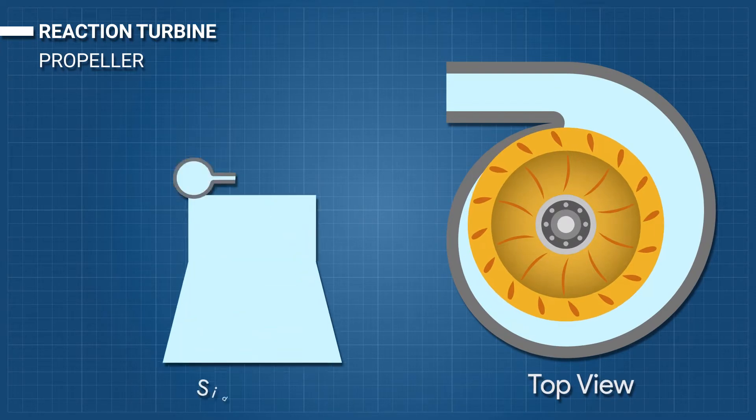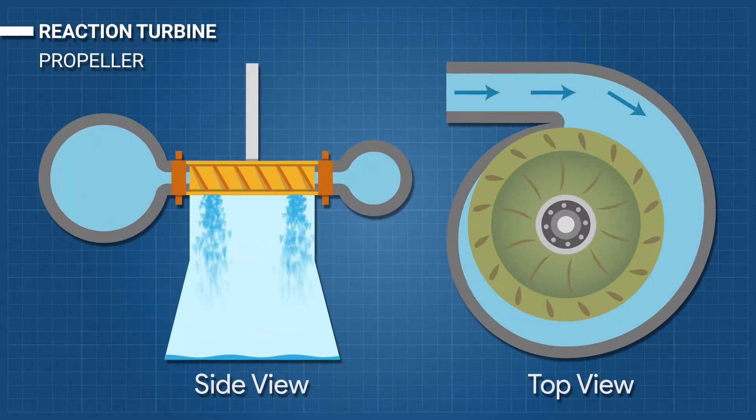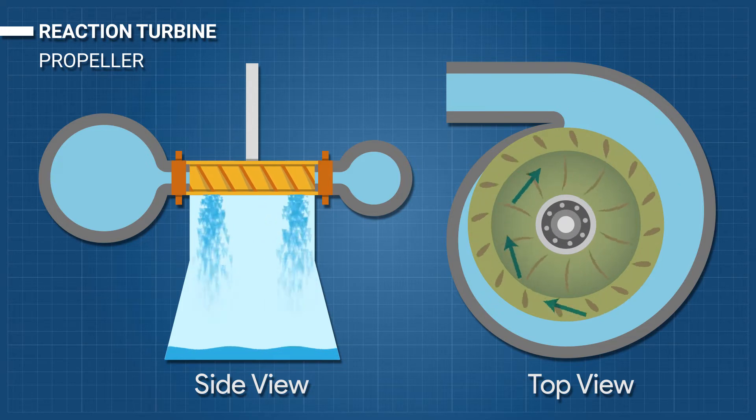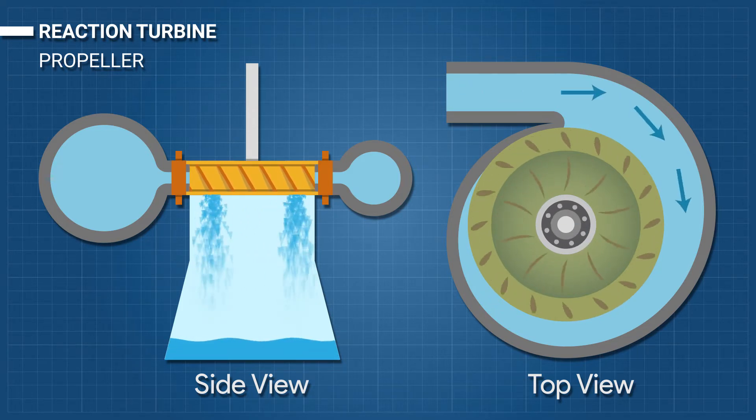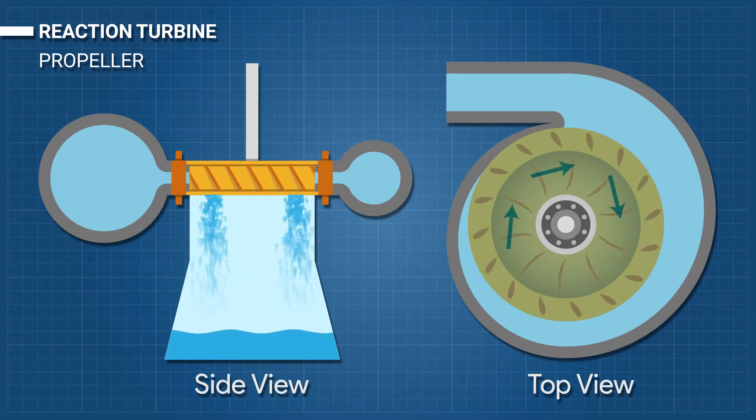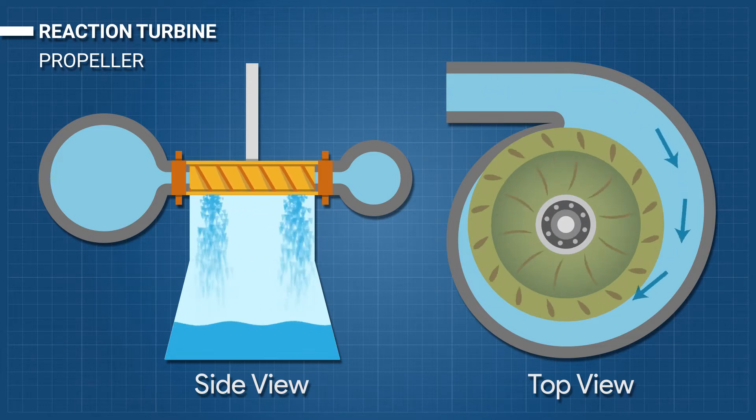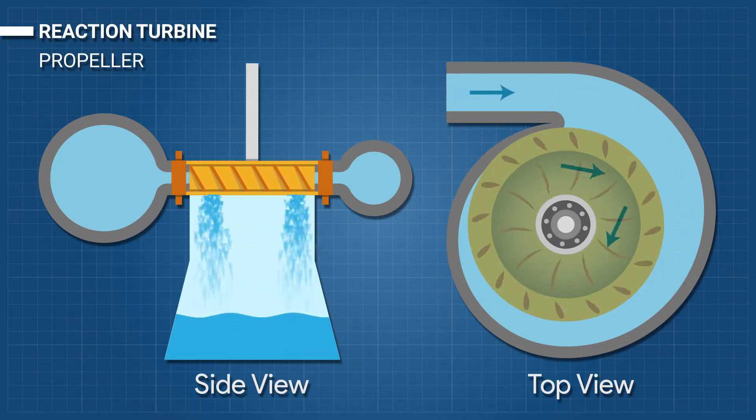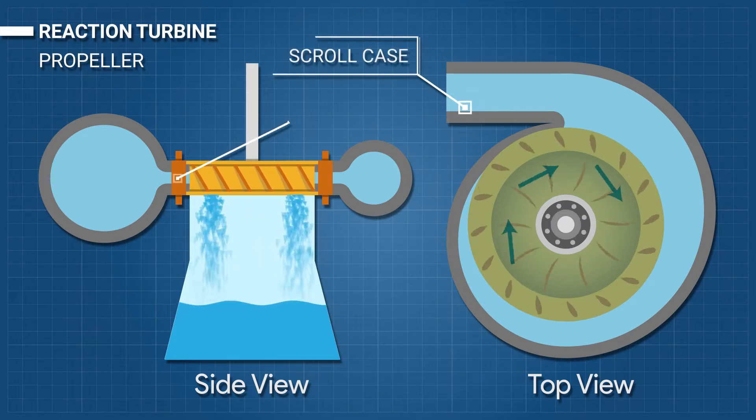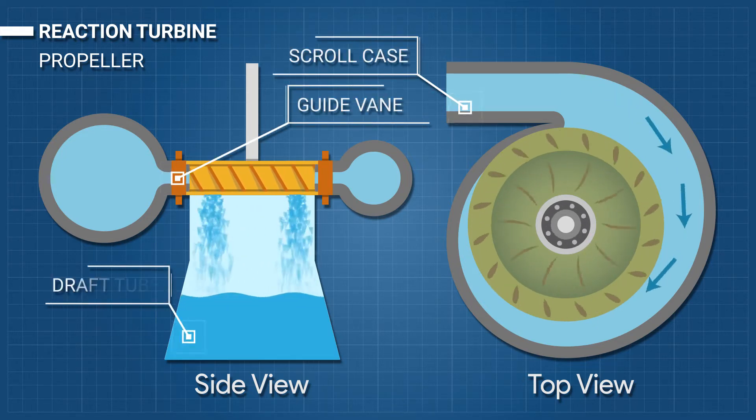Propeller: A propeller turbine generally has a runner with three to six blades in which the water contacts all of the blades constantly. The pitch of the blades may be fixed or adjustable. The major components besides the runner are a scroll case, guide vane, and a draft tube.